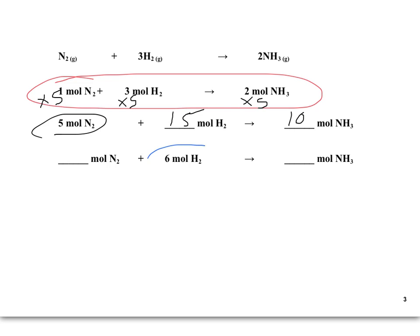Now let's say we had six moles of hydrogen. The original coefficient on hydrogen is three, but we have six, and we can get from three to six by multiplying by two. So I'm going to take the coefficient of one for nitrogen and multiply it by two — I get two moles of nitrogen. And the coefficient of two for ammonia, I also multiply by two, so I have four moles of ammonia. These coefficients represent a mole ratio. This is stoichiometry.